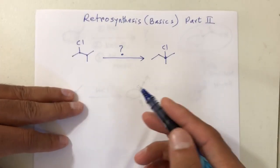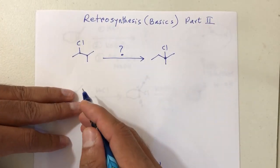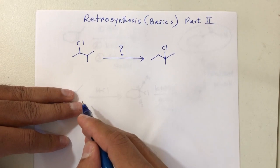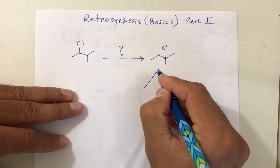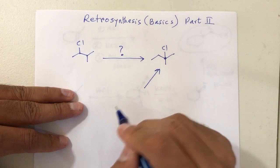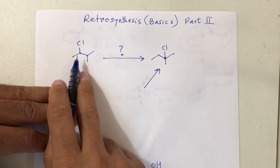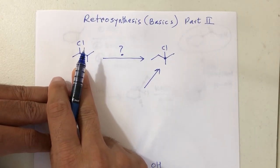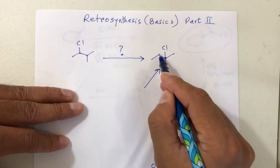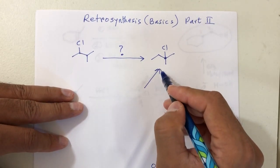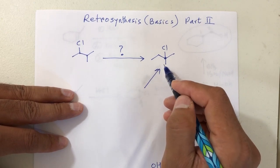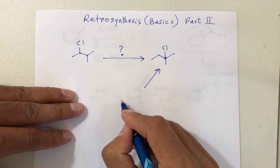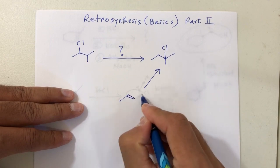So there's another plan. The best way is to take a step back and see if I can find something which can be obtained from the starting material. What kind of reaction will give you chlorine on the molecule? If you remember, we talked about hydrohalogenation. So if you apply hydrohalogenation, I need a double bond here.